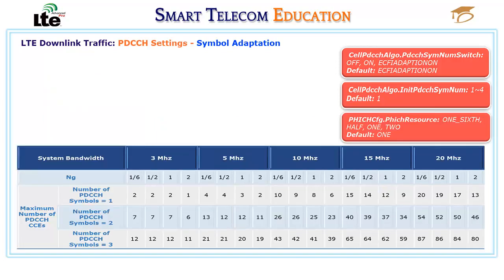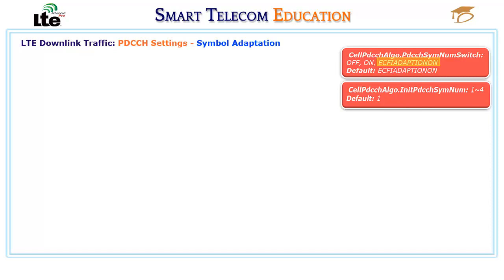The following table shows the maximum number of PDCCH CCEs in one frame for different settings of the PDCCH symbol number switch, initial PDCCH symbol number, and PHICH resources parameters. When the PDCCH symbol number switch is set to ECFI Adaptation ON, the enhanced PDCCH symbol adaptation is enabled. This function enables symbol adaptation based on downlink load, CCE load, and scheduling type.